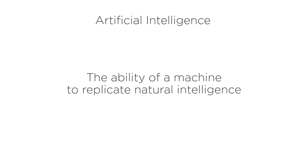Artificial intelligence is the ability of a machine to replicate natural intelligence. This includes replicating human-like intelligence, other organic intelligence, or collective intelligence. Essentially, if a machine is capable of recreating the same decisions and actions that a natural intelligence would produce, then it is a type of artificial intelligence.